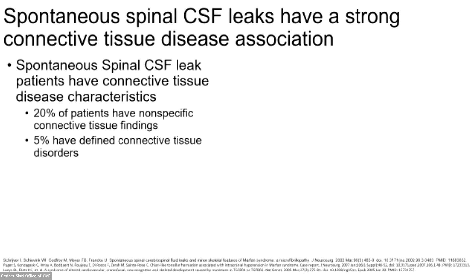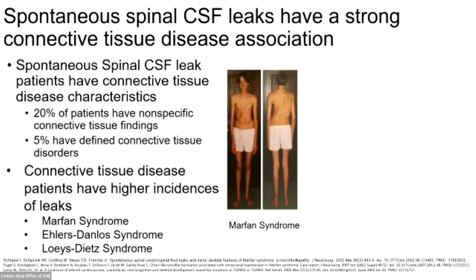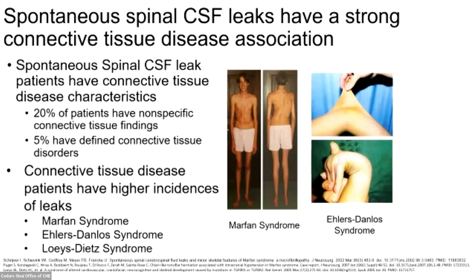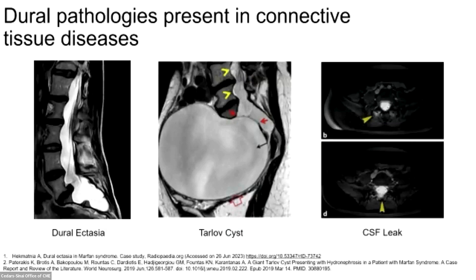About 5% of spontaneous spinal CSF leak patients have defined diagnosable connective tissue disorders. Conversely, we know that patients with connective tissue diseases have higher incidences of spinal CSF leaks, which include patients with Marfan syndrome, Ehlers-Danlos syndrome, and Loeys-Dietz syndrome. There are also additional dural pathologies that are quite common in heritable connective tissue diseases.